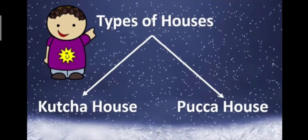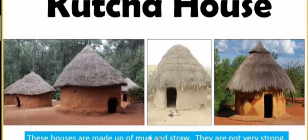There are two types of houses: kaccha house and pakka house. Kaccha houses — look at this picture. These houses are made up of mud and straw and they are not very strong. These huts are made of bamboo, straw, dried leaves and mud, and they are known as kaccha houses or temporary houses.